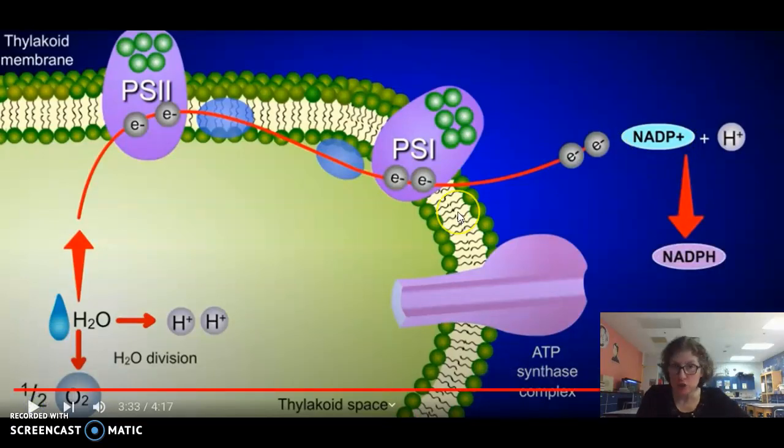So the two products that come out of the light reactions are ATP and NADPH, which sounds an awful lot like NADH in the mitochondria, doesn't it? And that's because it's almost the exact same molecule that does almost the exact same job.